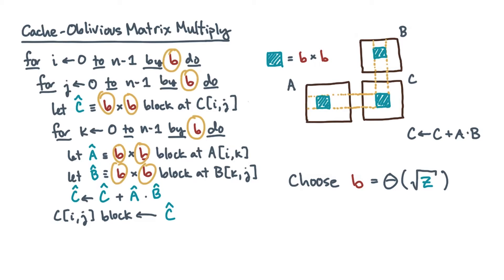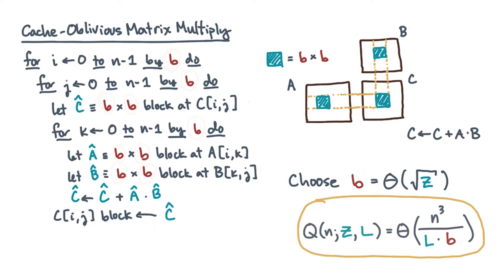You can show that the number of cache misses is asymptotically n cubed divided by l times b. Since b is proportional to the square root of z, that's just n cubed over l root z. As it happens, for any non-Strassen matrix multiply, no algorithm can do asymptotically better than this.